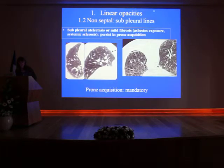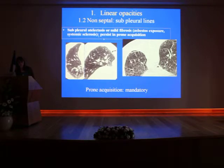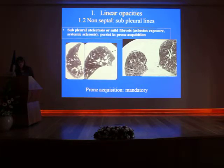The last type of linear opacity is subpleural lines. There are two different etiologies: one is subpleural atelectasis, in which case the feature will disappear in the prone position. If it persists, it is a sign of mild fibrosis that you will see in asbestos exposure and also in systemic sclerosis. With this sign, it is very important to perform prone acquisition to see whether it is persisting or not.